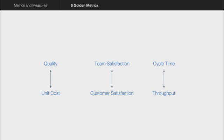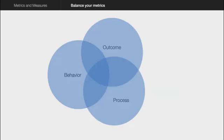You can see that there will be a very good interplay between team satisfaction and customer satisfaction — a healthy tension. There'd be a good healthy tension between cycle time and throughput, and often a good healthy tension between quality and unit cost. The important thing to remember is to balance your metrics: make sure you have some behavior metrics, some outcome metrics — which could be financial, deadline-based, or service level agreement-based — but also measure your process.